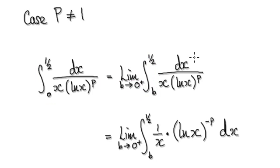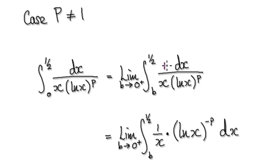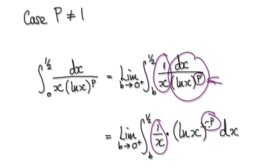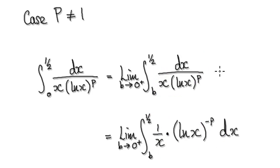Now it really boils down to us trying to integrate this. But before we integrate it, visualize this thing here as this multiplying with a negative version of this thing here — visualize it as one thing multiplying another.